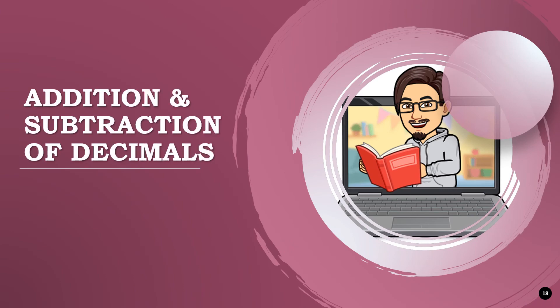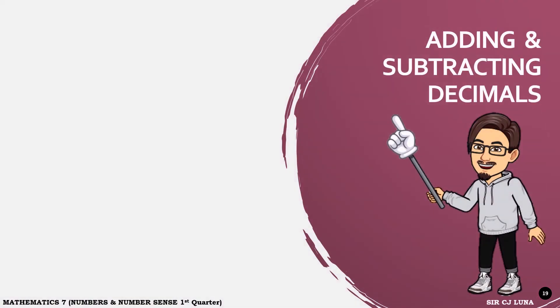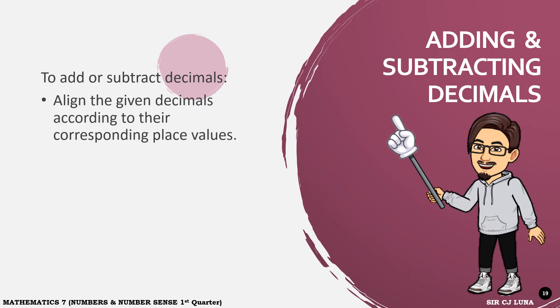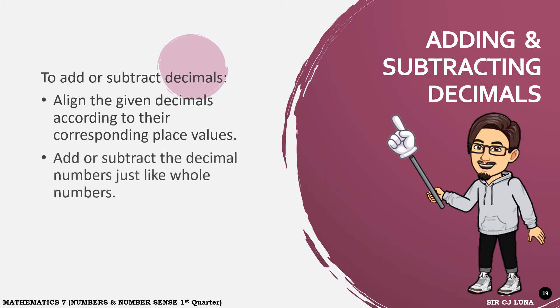Let us now move on to decimals. Just like integers and fractions, we can also add, subtract, multiply, and divide decimals. To add or subtract decimals, you have to align the given decimals according to their corresponding place values. And then add or subtract the decimal numbers just like whole numbers. And lastly, affix the decimal point.